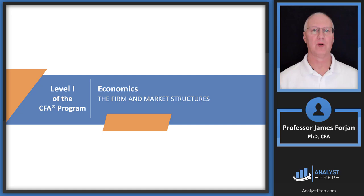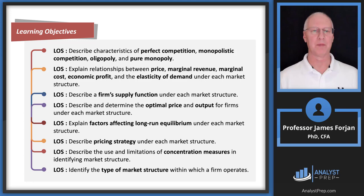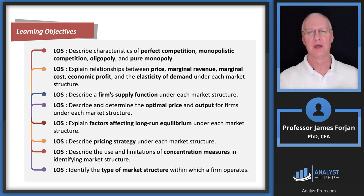As we go to this first learning outcome statement, you need to know everything about perfect competition, monopolistic competition, oligopoly, and a pure monopoly. We're going to talk about the definition of those four market structures, and then things like elasticities, marginal revenue, supply functions, factors, strategies, and concentration measures. This could really be summarized as one LOS: know everything about these four structures.